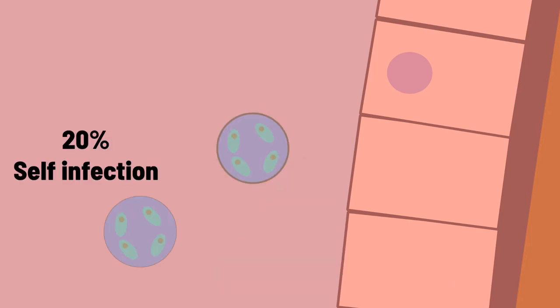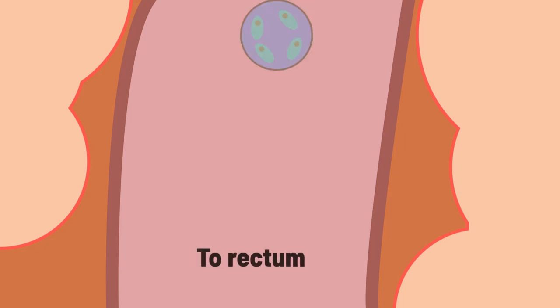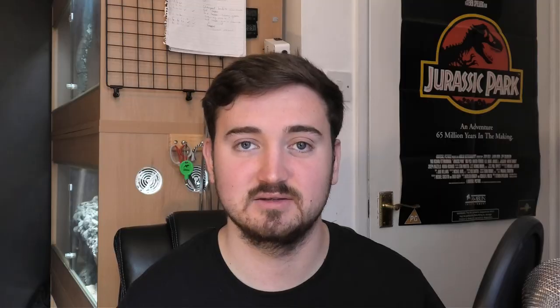The microgametocytes divide into 16 before being released to fertilise the female macrogamonts. Zygotes are then formed, which build walls around an oocyst containing four sporozoites. About 20% of oocysts produced are thin-walled and reinfect more cells as self-infection, while thick-walled oocysts are passed into the faeces to infect another host. The transmission route is faecal to oral — through faeces, contaminated surfaces, objects, or direct contact.